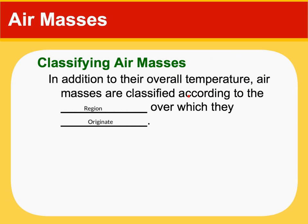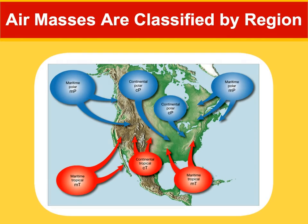Air masses are classified by temperature and humidity, based on where they originate. Polar air masses come from the north, tropical from the south. If an air mass is coming from the ocean, we use a lowercase m for maritime — those are going to have humid, moist air. A lowercase c stands for continental, meaning it comes from land and brings dry air. A capital P means polar, so cold weather, and a capital T means tropical, so warm weather.